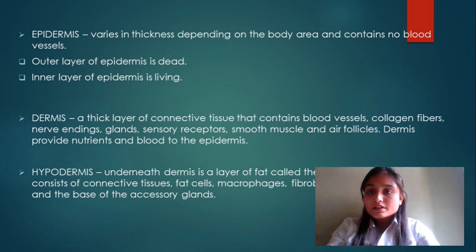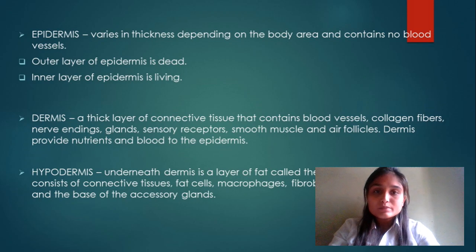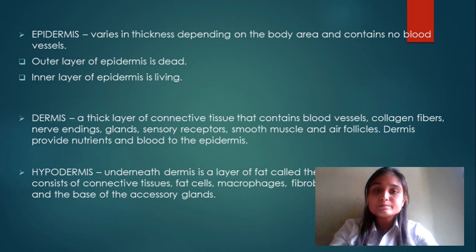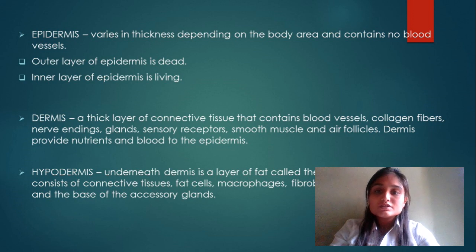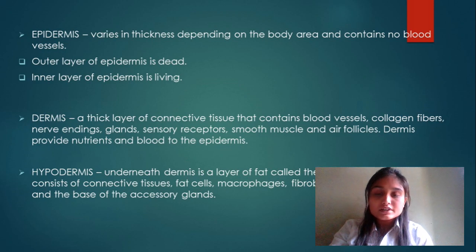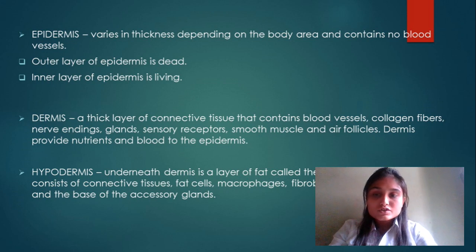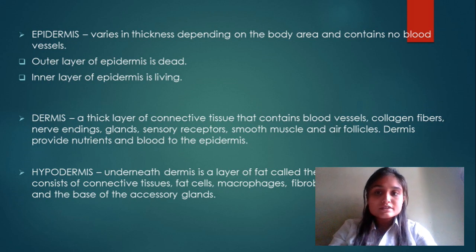The dermis is a thick layer of connective tissue that contains blood vessels, collagen fibers, nerve endings, glands, sensory receptors, smooth muscles, and hair follicles. The dermis provides nutrients and blood to the epidermis. Underneath the dermis is a layer of fat called the hypodermis, which consists of connective tissue, fat cells, macrophages, fibroblasts, and the base of accessory structures.